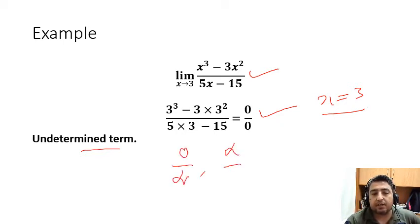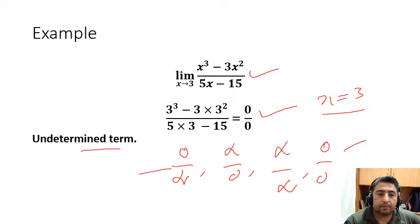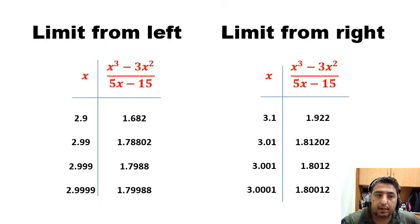Or 0/∞ or ∞/0 or ∞/∞. These four are indeterminate forms. This means we cannot use direct substitution; we cannot replace x with 3 directly. So let's try the tabulated method.